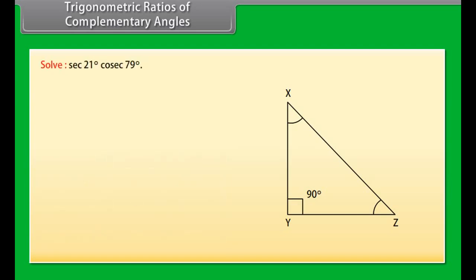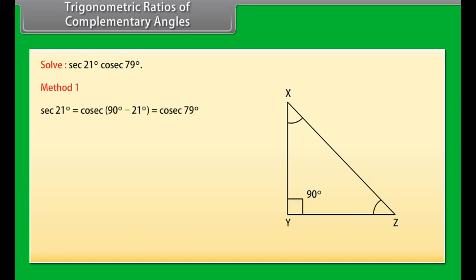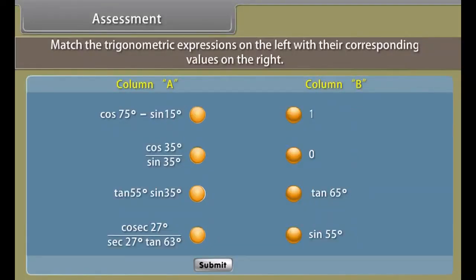Solve: sec 21° · cosec 79°. Since sec 21° = cosec(90° − 21°) = cosec 79°, the expression simplifies directly. Assessment: match the trigonometric expressions on the left with their corresponding values on the right.